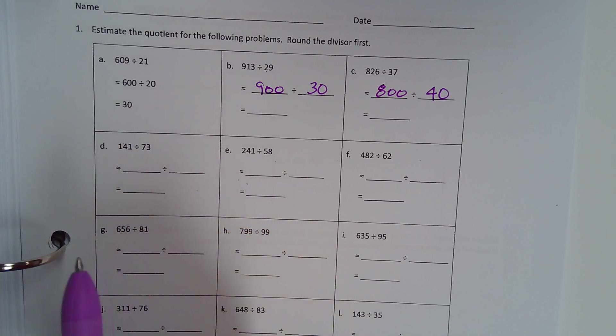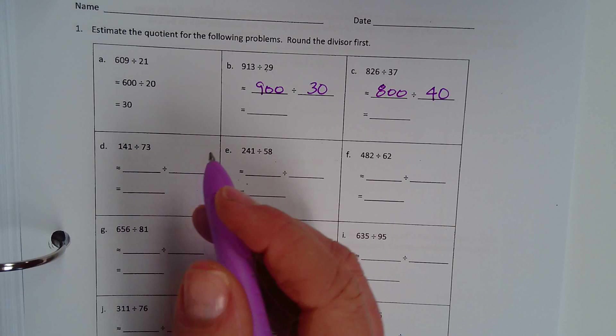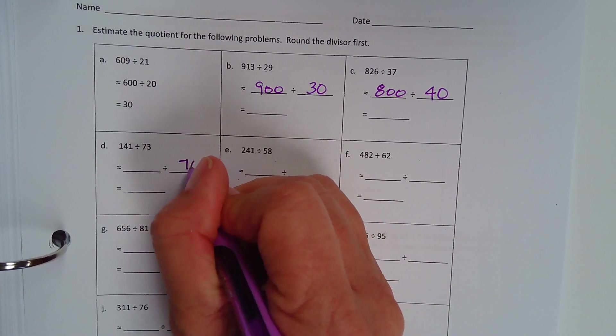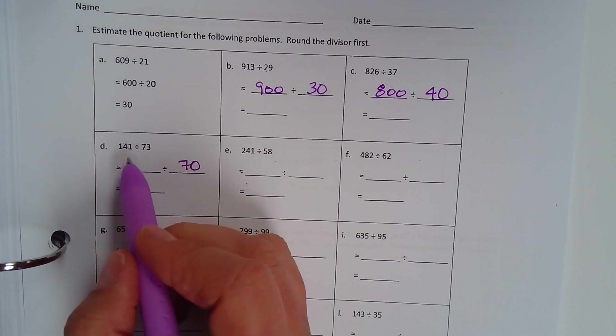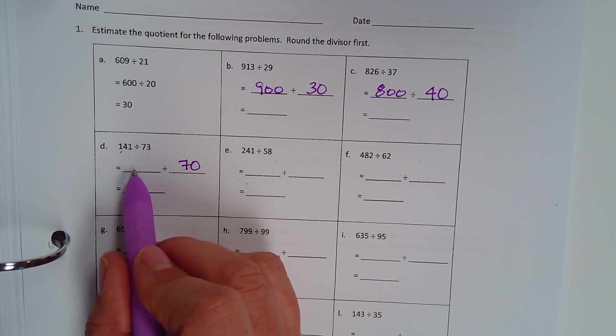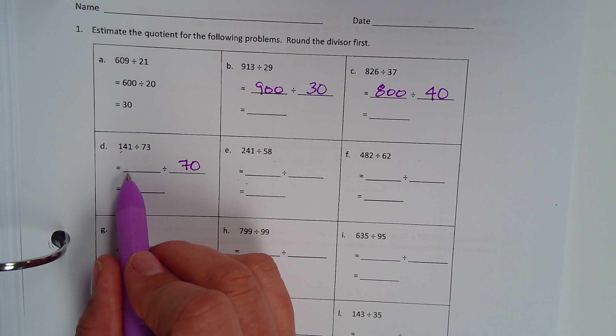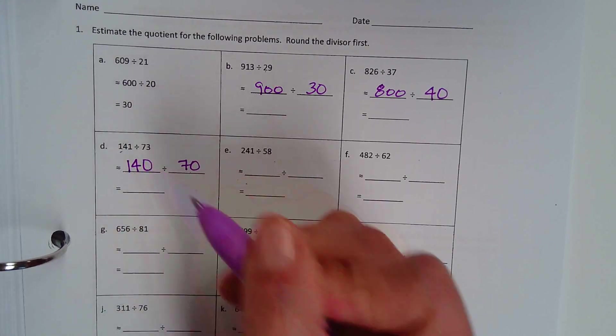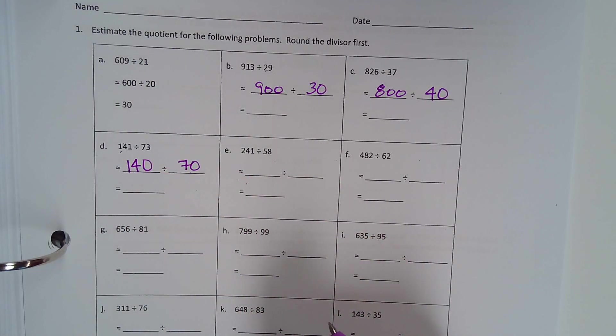Now let's go down to D. 73 would be really easy to round to 70, right? Now, 141. Based on the fact that I know that this is 70, my divisor 70, what should I round 141 to to make it easy to divide? 140, right? Do you guys see the pattern?